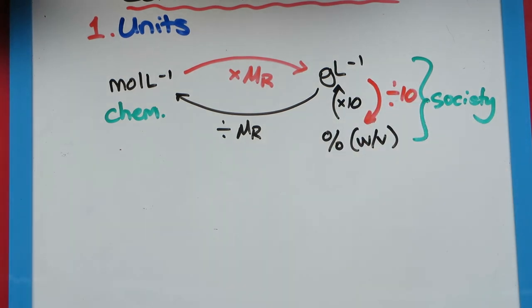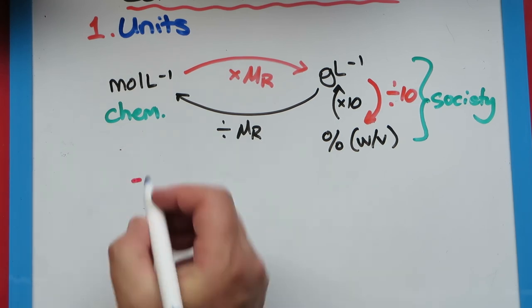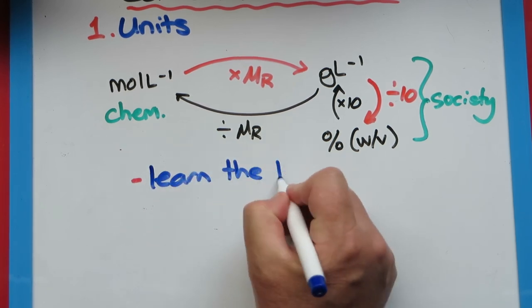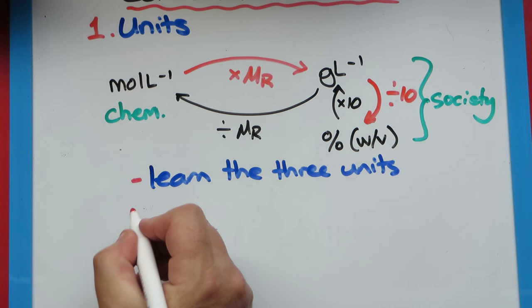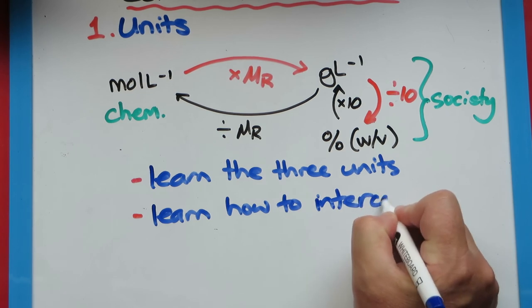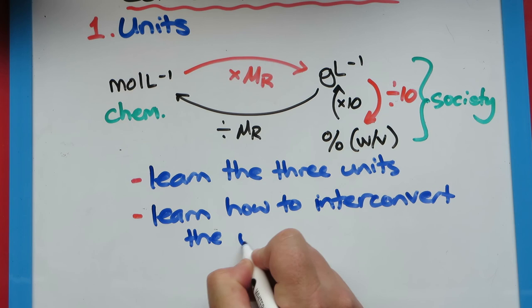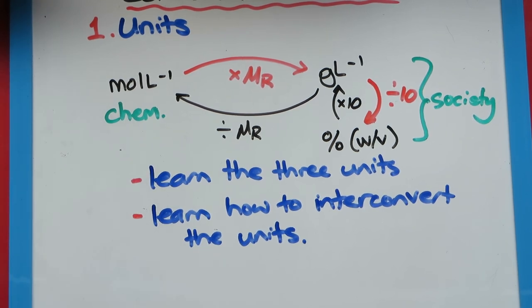So what do I need to know? Number one: I need to know the three units. So learn the three units—that's a pretty easy thing to do. The next step's a little bit harder, and that is learn how to convert them into each other. So learn how to interconvert them. That's turning one unit into another unit, and that's mainly for communicating to your audience or taking their unit and turning it back into moles per liter so you can use it for analysis work. And that's our first one on solutions and concentration, just looking at units.